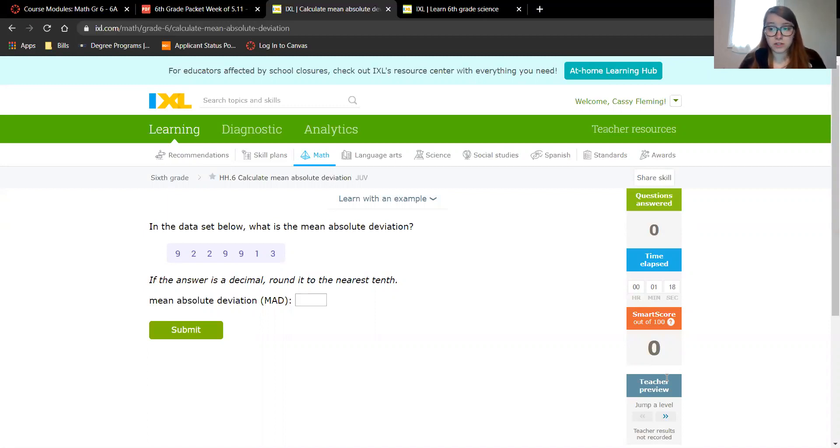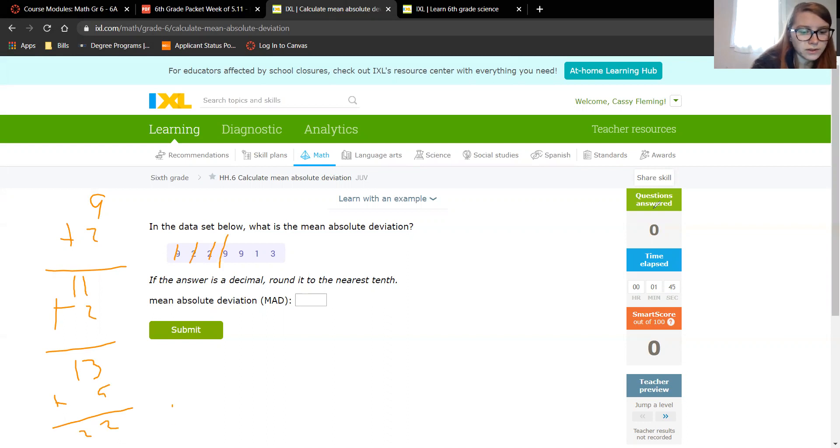So the first thing we need to do is find the mean of this data. Let me get my screen right. I'll do orange now. So you have 9 plus 2, that is 11, plus 2 is 13, plus 9 is 22, plus 9 is 31, plus 1 is 32, plus 3 is 35.